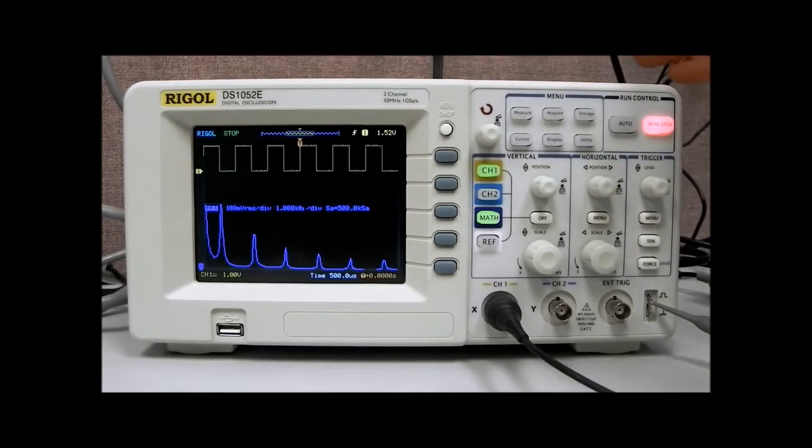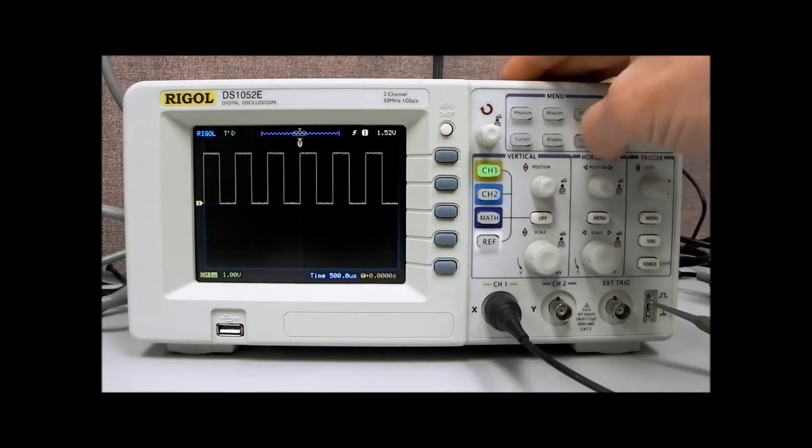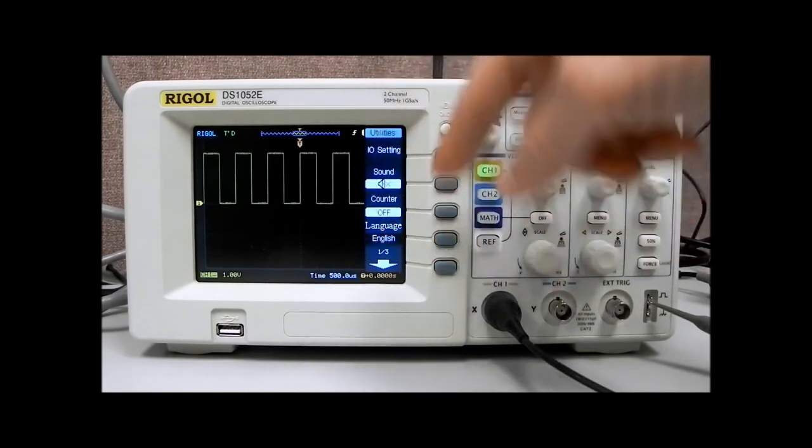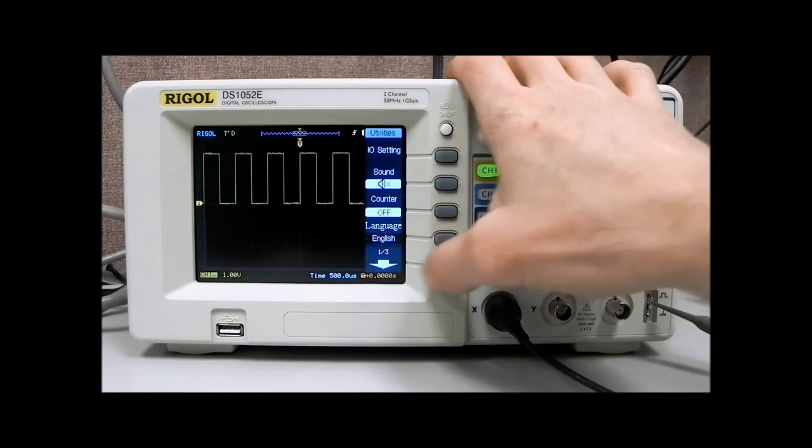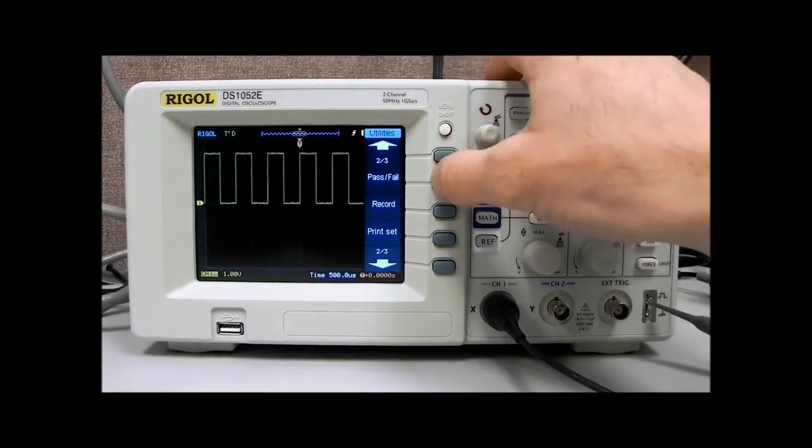Another great feature of the scope is the mask and pass-fail function. So I'm going to enable the scope to run again. Disable math, I'm going to go to utility, and pass-fail. Sometimes you'll come up in this main page, page 1, you'll see it says 1 of 3. So let's go to 2 of 3 in the utilities menu, hit pass-fail.